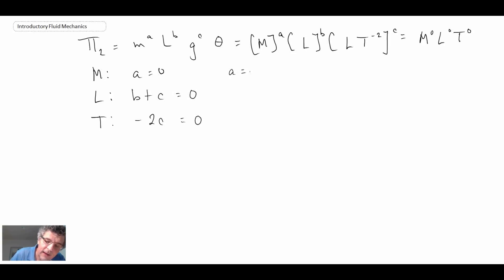And then finally for time, on the left-hand side, we have a minus 2c, and that's balanced by 0 on the right. So what are we getting here? We're getting a equals 0, c equals 0, and b equals 0. So this is an interesting one. What we end up with is pi 2 is just equal to theta. And not 0 theta. There we go. And that is dimensionless because we said it was. So that checks out.